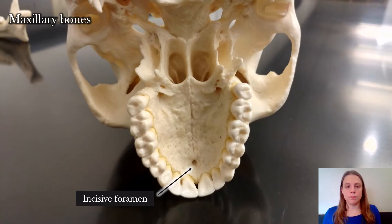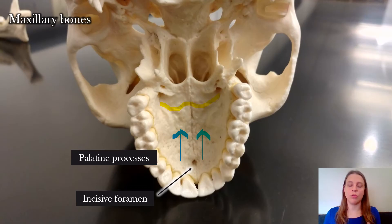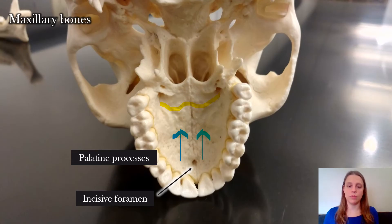The anterior two-thirds of the roof of the mouth is still part of the maxillary bone, and that part is called the palatine processes. The back one-third of your mouth — everything behind that line — is the palatine bone. So the palatine processes are going towards the palatine bone.